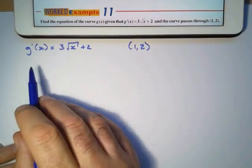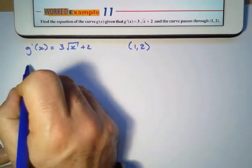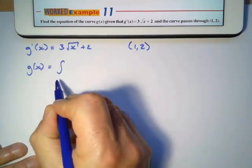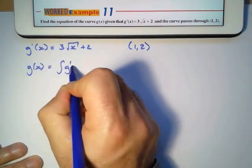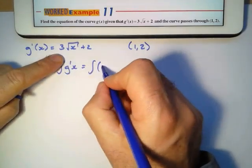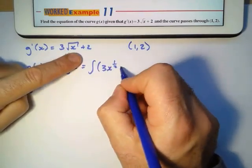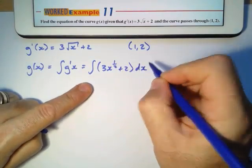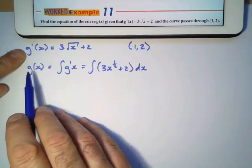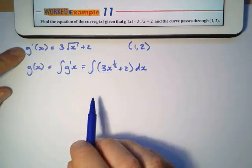Now, what I need to know is I need to find the curve g(x). Now I know that to find g(x), g(x) will equal the integral of g'(x), which means this will be the integral of this function 3, and I'm going to rewrite that as x to the power half plus 2 in terms of x. To find g(x) from the derivative I have to integrate the derivative to find the value.